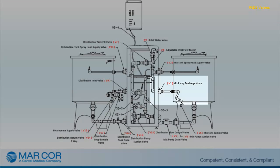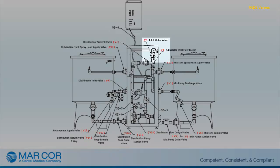When opened, V1, the Mixed Pump Discharge Valve, allows flow from the Mixed Pump into the Mixed Tank. When opened, V2, the Mixed Tank Spray Head Supply Valve, allows flow from the Mixed Pump to the Mixed Tank Spray Head. The Spray Head delivers spray to cover internal portions of the Mixed Tank. When opened, V3, the Inlet Water Valve, allows RO water flow into the system.